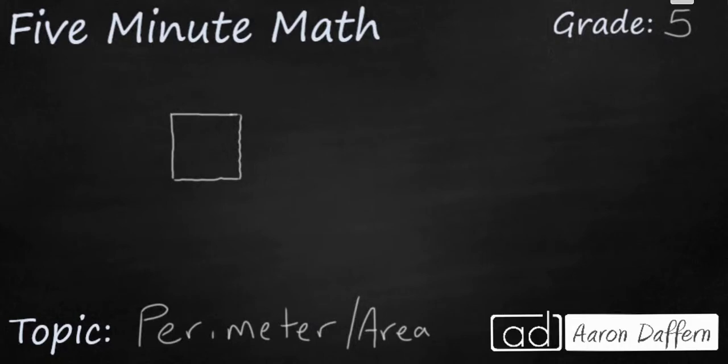So let's start out with this square. If I were to give you the area of this square, say it's 16 square inches, how could we use that information to find the perimeter?